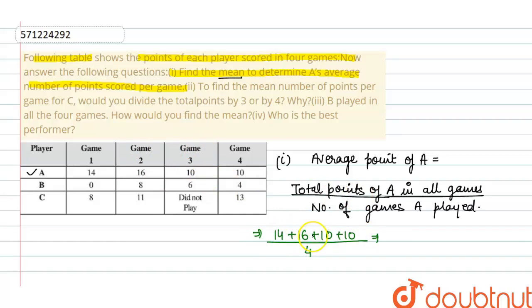When we add this, 14 plus 16 is 30, 40, 50. 50 upon 4. When we reduce it, we get 12.5. This is the mean of the first part, which is 12.5.